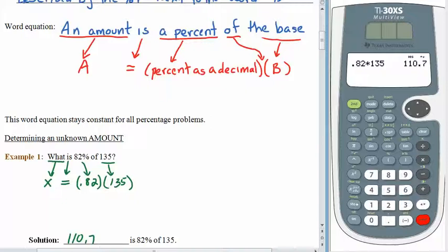110.7 is 82% of 135. Of course, we always want to check and make sure that our answer is reasonable. 82% is more than half, sort of close to the whole thing. 110.7 is more than half and sort of close to all of 135. So it's in the right ballpark. Alright, let's flip the page.